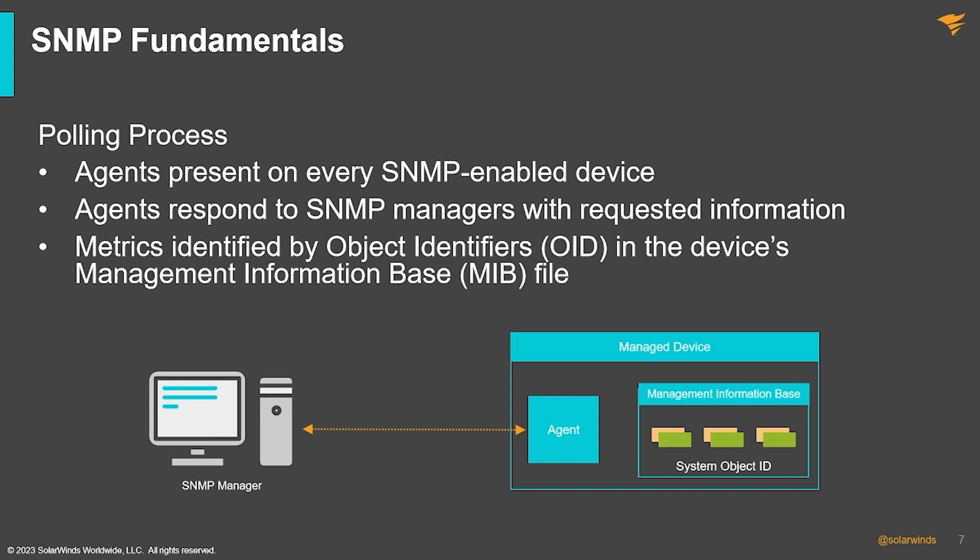But where does the SNMP agent get management information? Every SNMP agent maintains a database known as the Management Information Database, or MIB. A MIB is a collection of information about a device organized in a tree or hierarchy. The database includes a standard set of statistical and control values of hardware devices on a network. The SNMP manager uses this database to extract crucial information with the help of SNMP agents.